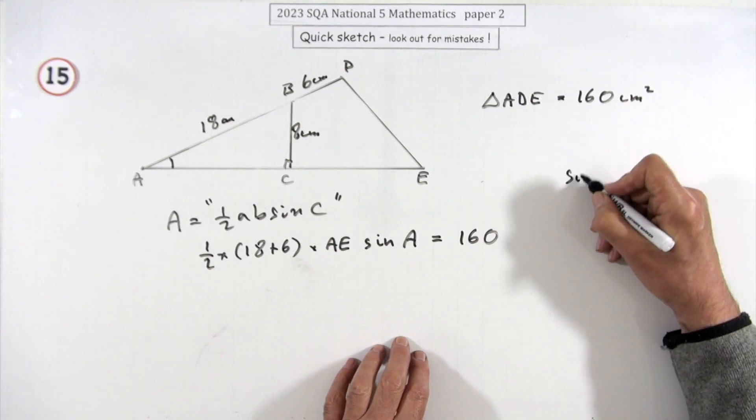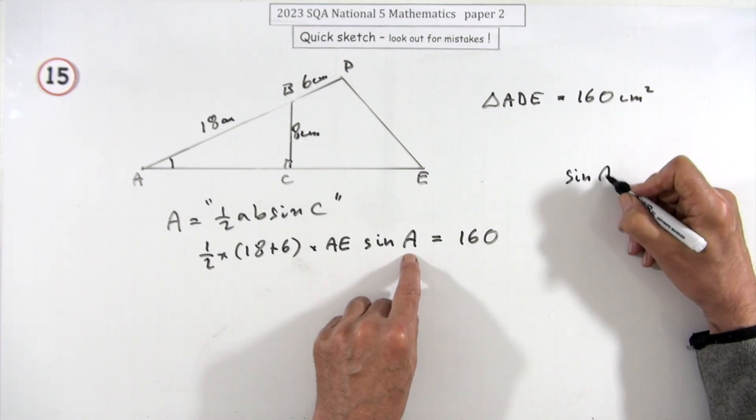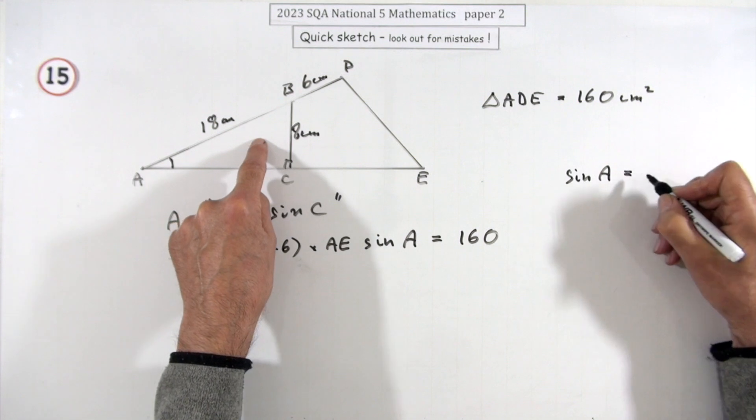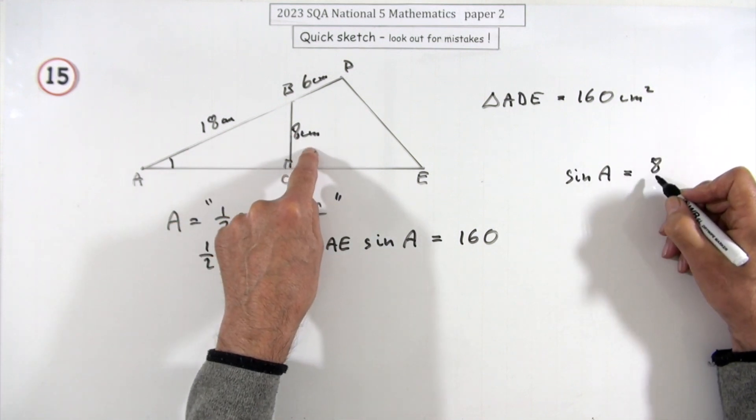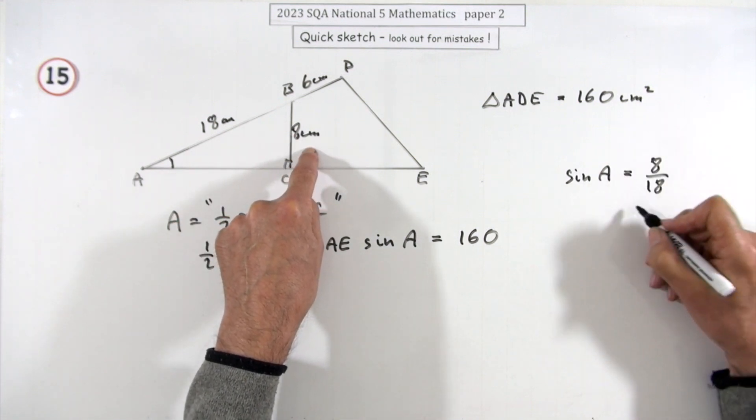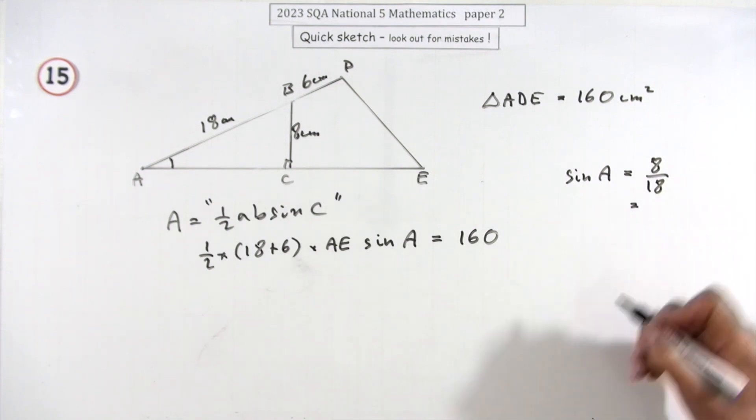That means I just need sine A, and I've got everything I need to find AE. You'll get sine A from that little triangle. You won't even need A because that triangle gives you the sine of A directly. The sine is the opposite, and that is the opposite over 18.